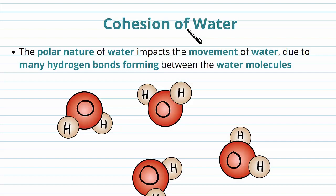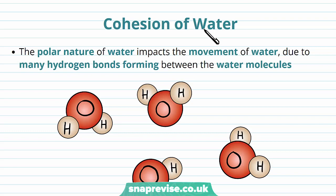Water actually undergoes a force called cohesion, whereby water molecules stick together. Remember that water is a polar molecule and therefore it has uneven charge over it, and this impacts the way that water flows as a liquid. It's due to the many hydrogen bonds which exist between the water molecules.